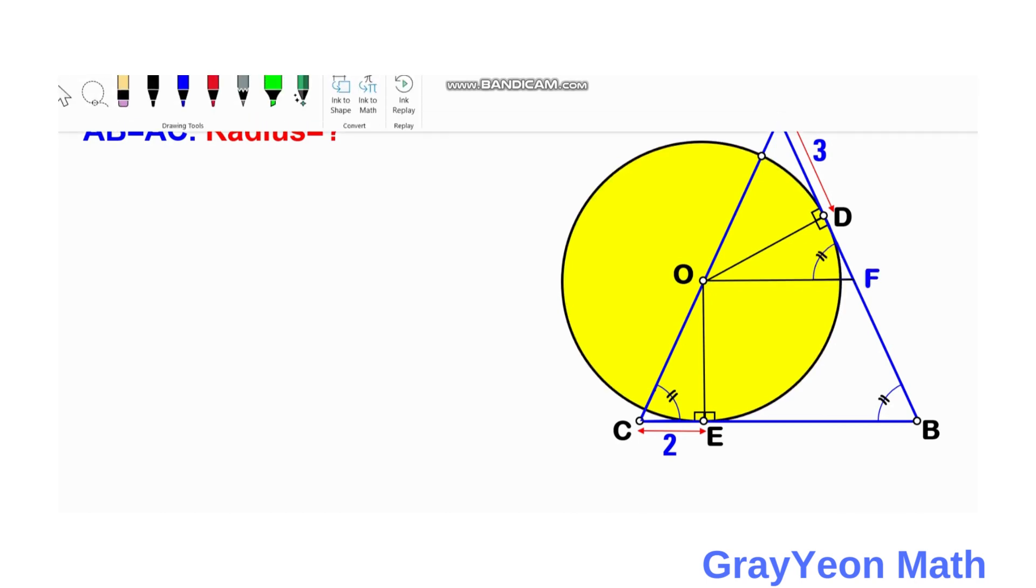We notice that the perpendicular distance from the center to D is the radius, so we can label this R. Same with OE, this is also the radius of the circle.